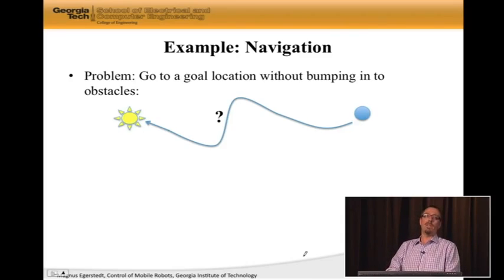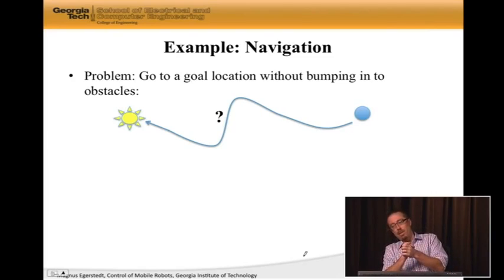So here is an example problem. We've already seen this picture. This is the problem of driving a robot—the little blue ball—to a goal, which is the sun apparently. Let's see if we can use this PID control design on ω to design controllers that take us to the sun or to the goal. Since we're dealing with obstacles, goal locations, and we're also talking about behaviors...